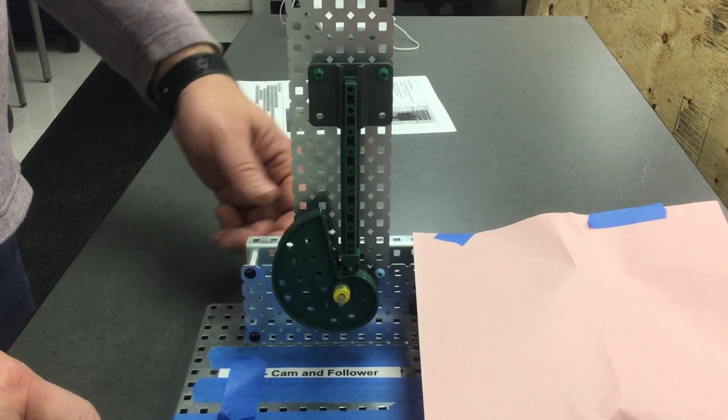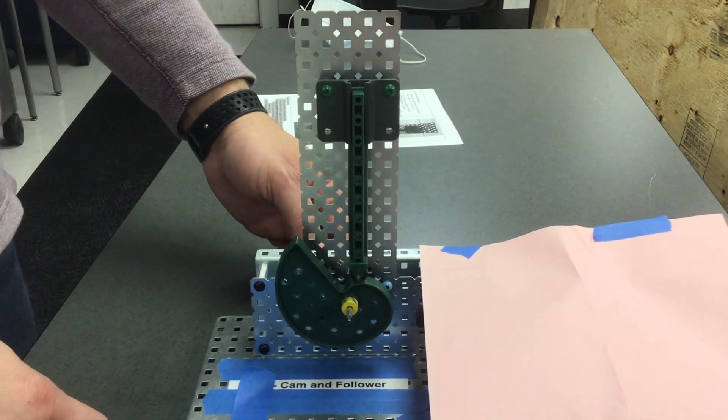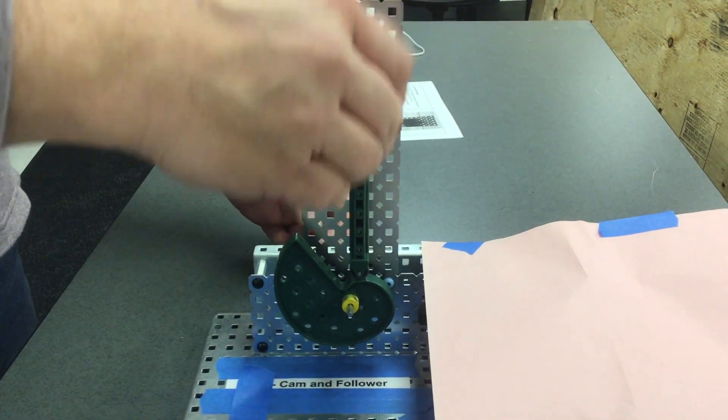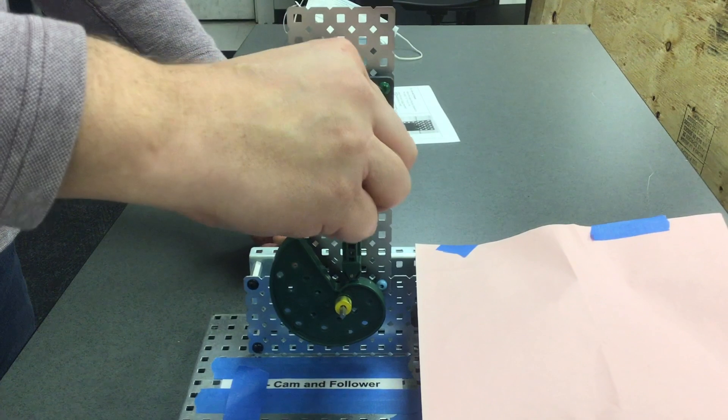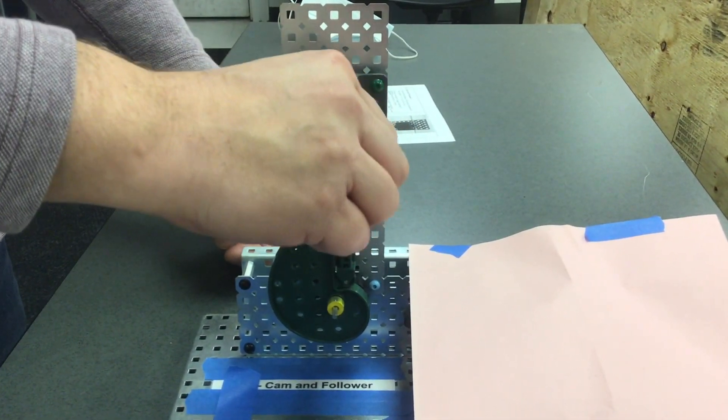The flow of power, however, is not reversible. Can I make the crank turn by pushing the follower? No, I can't. Moving the follower doesn't move the crank.